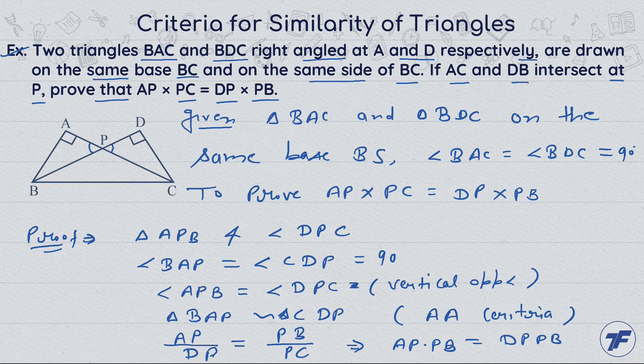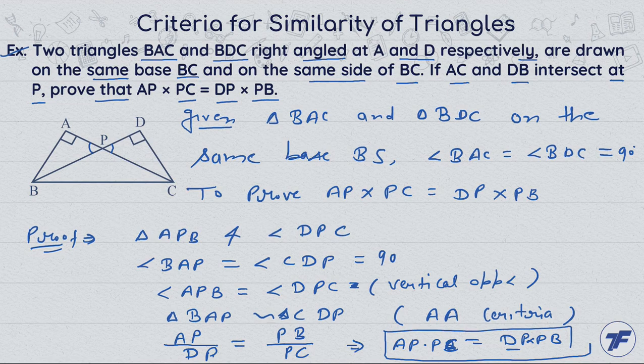Here, we took AP/DP and PB/PC. And what did we have to prove? AP into PC equal to DP into PB — we just cross multiplied to get the final result. This is our answer. The idea came from the fact that if AP upon PB gives some ratio, the triangles must be similar. Only then can we prove the given result. I hope it is clear to everyone.